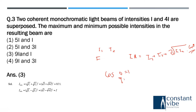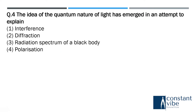When cos 90° equals zero, this gives us the maximum and minimum intensities. Using this formula, I max is equal to the sum with the positive cross term, and I minimum is equal to I. So the answer for the maximum and minimum intensities can be found from these expressions.